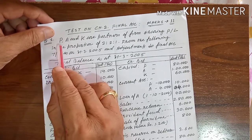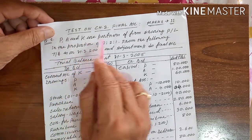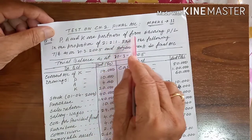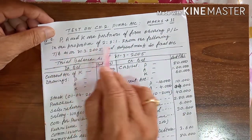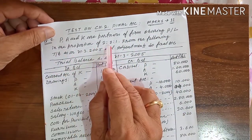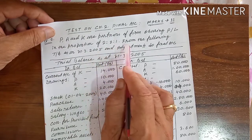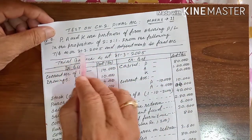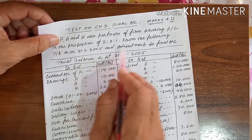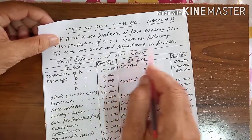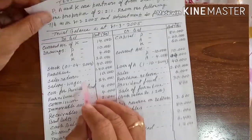Question number one: P, A and K are partners of the firm sharing profits and losses in the proportions of 2:2:1. From the following trial balance as on 31st March 2005, and the adjustments, do the final account. This is the trial balance debit side and this is the trial balance credit side.